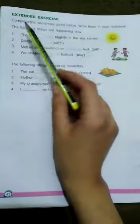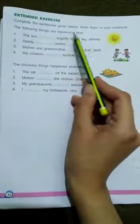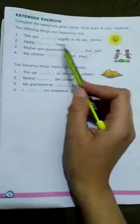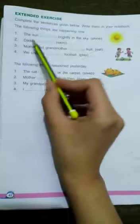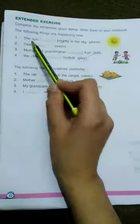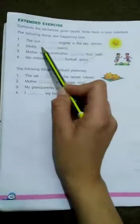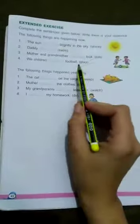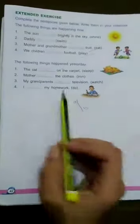Now come to page number forty-two. Complete the sentences given below. Write them in your notebook. The following things are happening now. You have to do it yourself in your notebook. For example, the sun is shining brightly in the sky. In this way you will do it yourself.